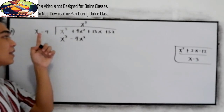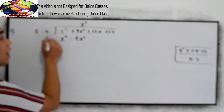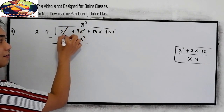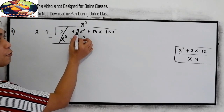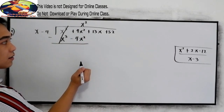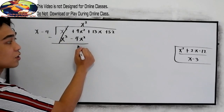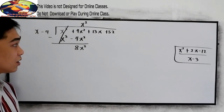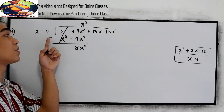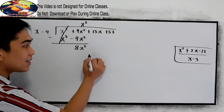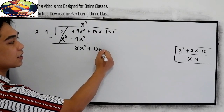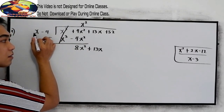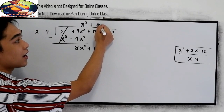So positive times negative, we have negative. Now subtract. x cubed minus x cubed gives us 0. 4x squared minus negative 4x squared — change the sign, this becomes positive 8x squared. Our rule in subtraction: change the sign of the subtrahend and proceed to addition. Now bring down positive 13x. 8x squared divided by x gives us positive 8x.